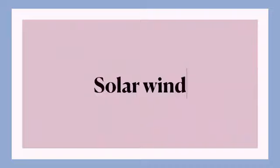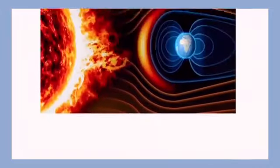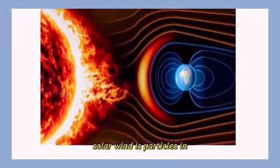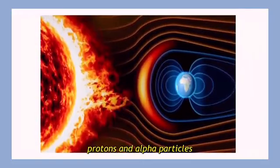Solar wind is particles in plasma such as electrons, protons, and alpha particles that erupt from the sun to outer space traveling together at high speed.